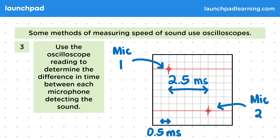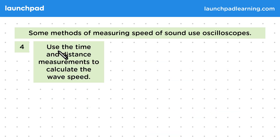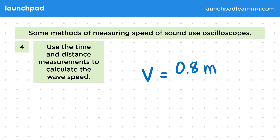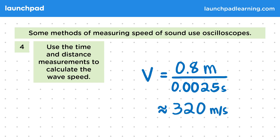This is the time it took the sound to travel from the first microphone to the second. And finally, step four: use the time and distance measurements to calculate the wave speed. Remember that speed is equal to distance divided by time. In this case, our distance would be 0.8 metres — the distance we measured between the two microphones — and the time would be 2.5 milliseconds or 0.0025 seconds. So our method gives an estimation of 320 metres per second for the speed of sound.